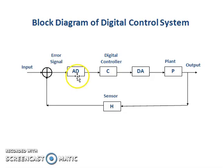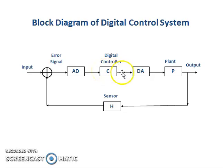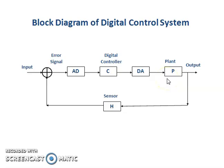There is a need to convert the error signal to digital form through an analog-to-digital converter. The output is then processed by a controller, and the digital output is reconverted to an analog signal, which is used to drive the plant. This is basically how the digital control system works.